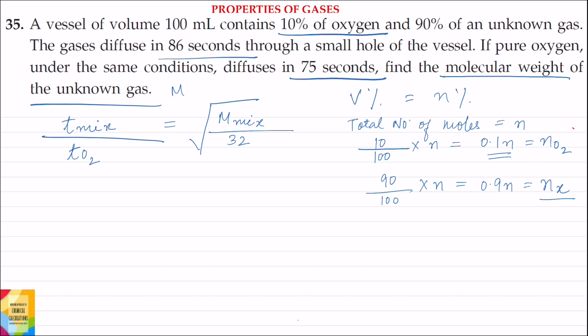Mx denotes the molecular mass of the mixture of gases. Time taken for diffusion of the mixture is 86 seconds; time taken for diffusion of oxygen is 75 seconds. Solving this equation, the molecular mass of the mixture of gases is equal to 42.075.